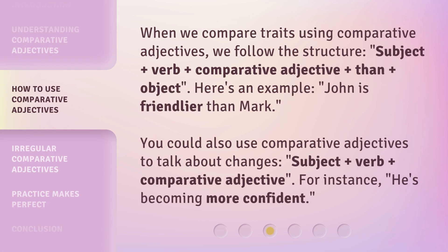When we compare traits using comparative adjectives, we follow the structure: subject plus verb plus comparative adjective plus "than" plus object. Here's an example: John is friendlier than Mark.